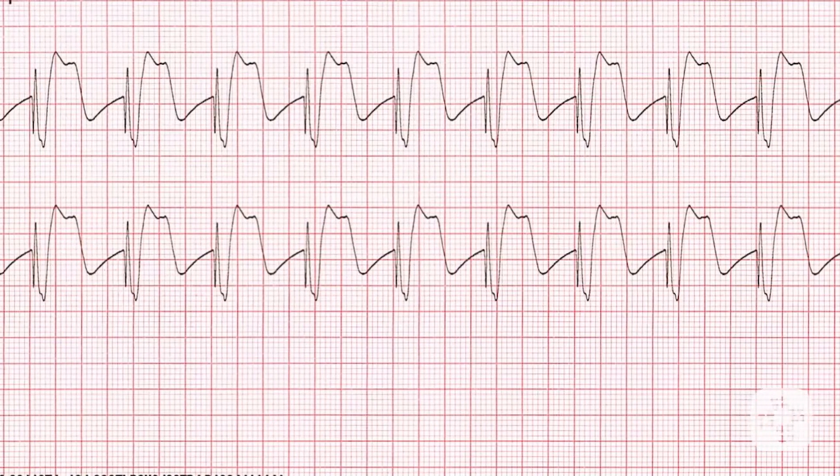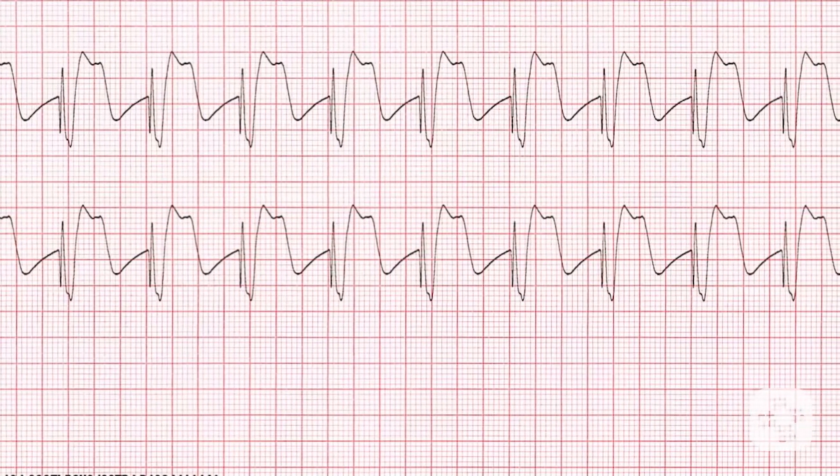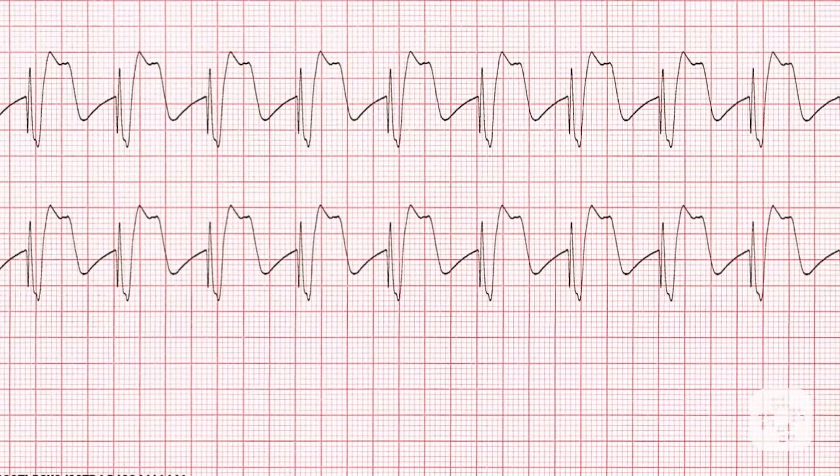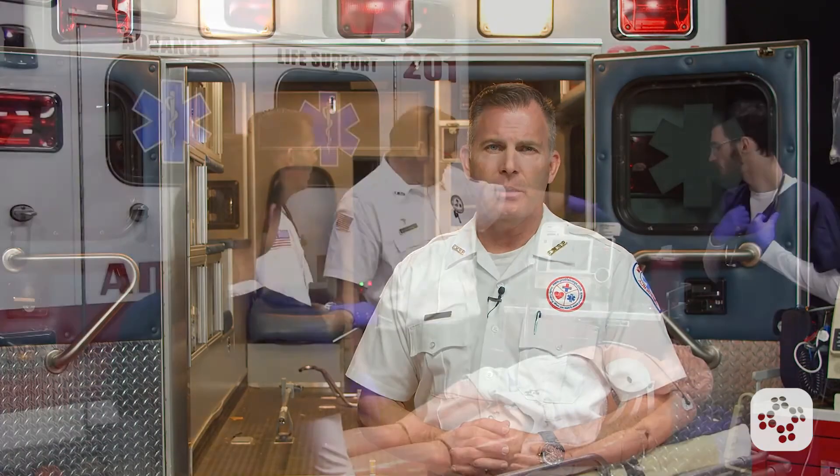We then turn up the milliamps to 75 to retain capture. Once you have consistent capture, we're going to adjust the rate to between 60 and 80 beats per minute. Remember, you can turn the rate up or down until symptoms improve. In our scenario, we turned the rate up to 68.